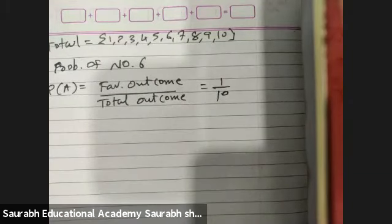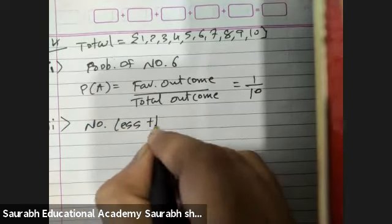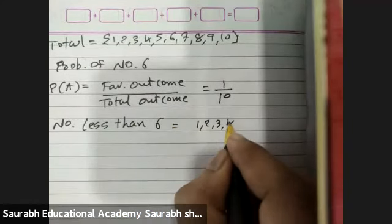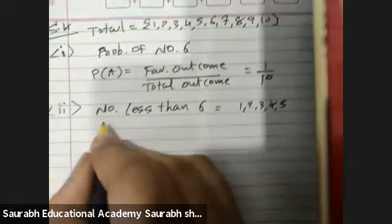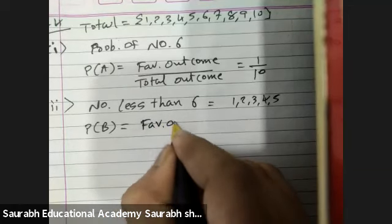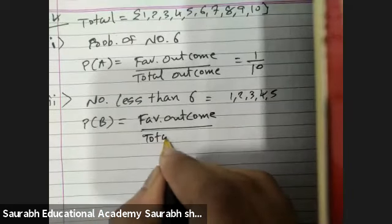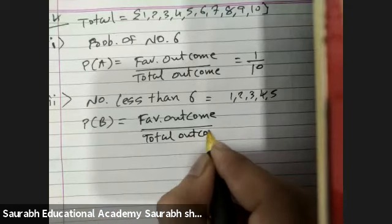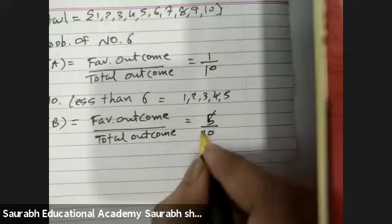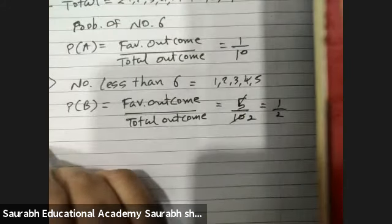Second question: getting a number less than 6. Numbers less than 6 are 1, 2, 3, 4, and 5. P of B equals favorable outcome upon total outcome — 5 numbers upon 10. Reducing, the answer is 1 by 2.